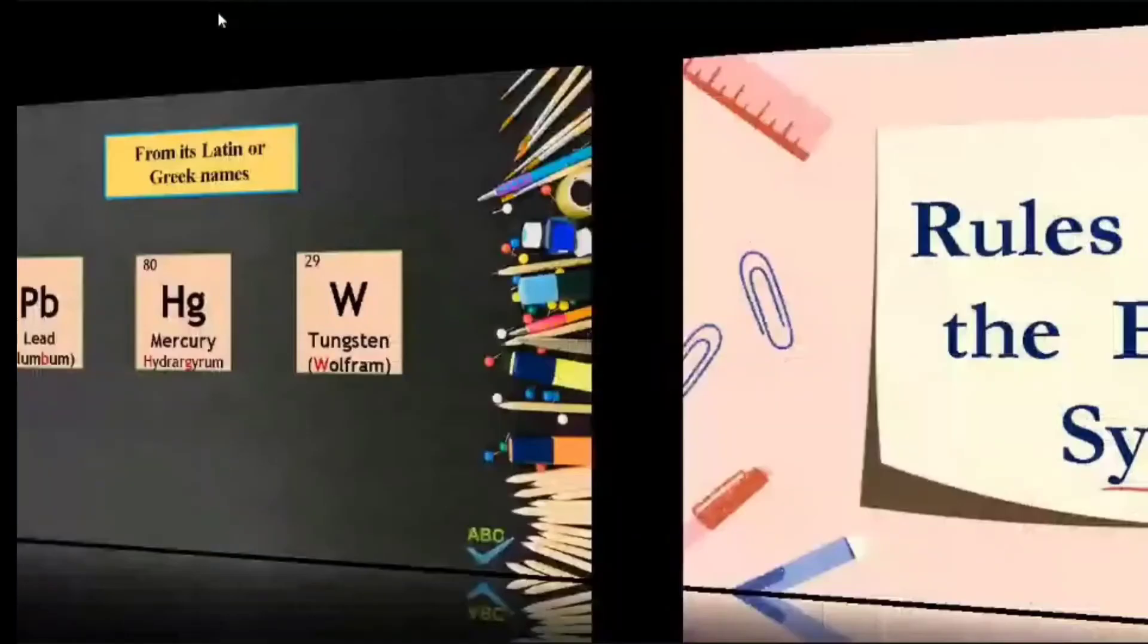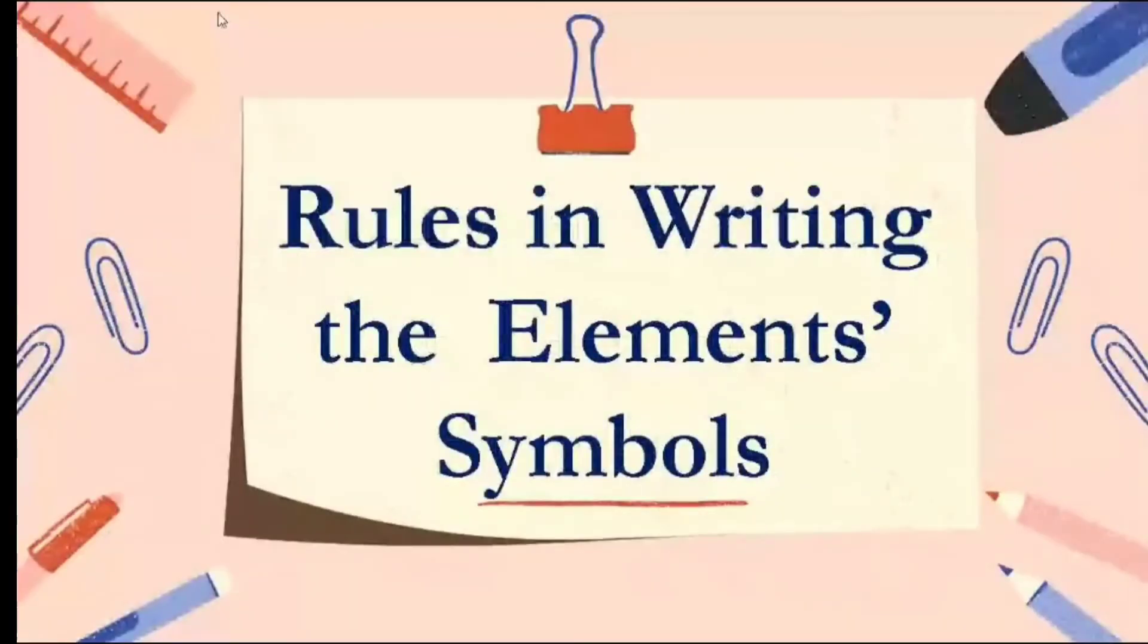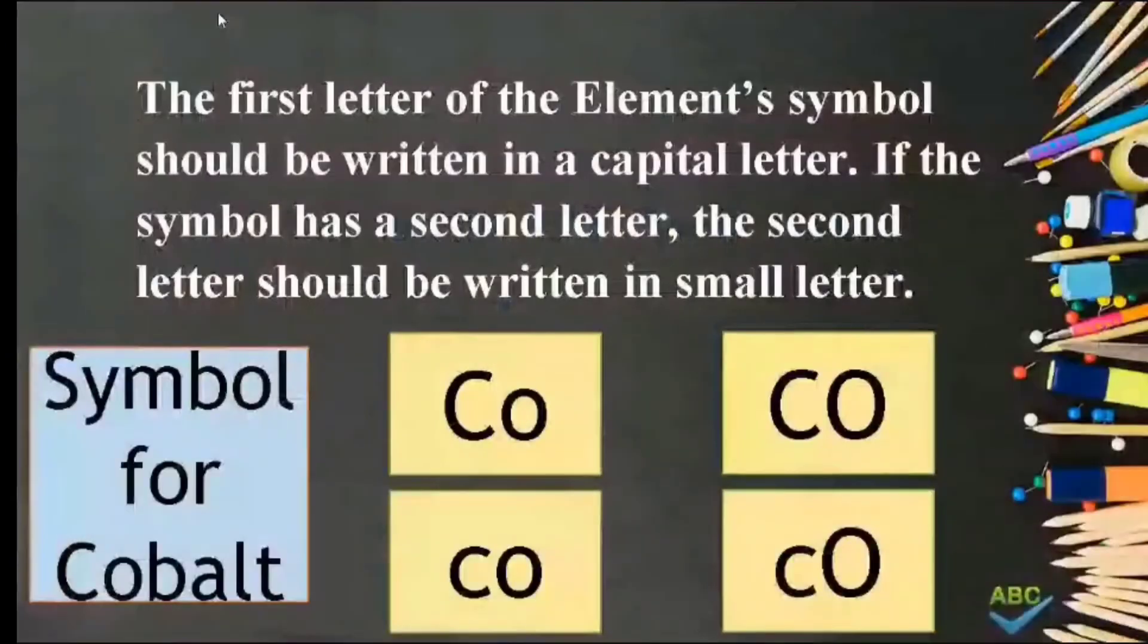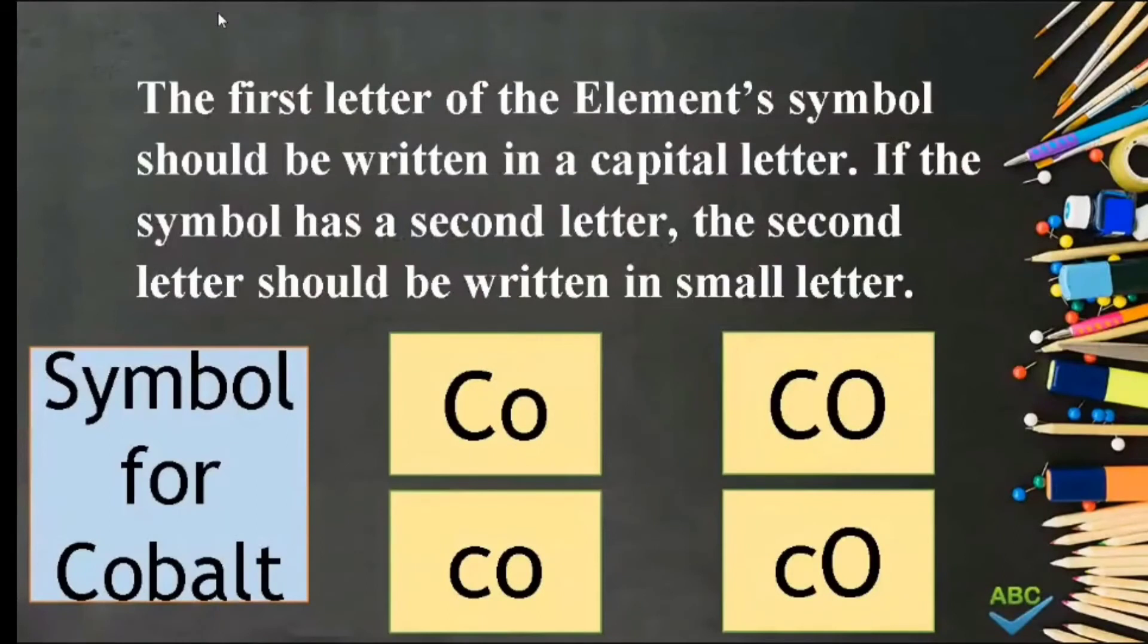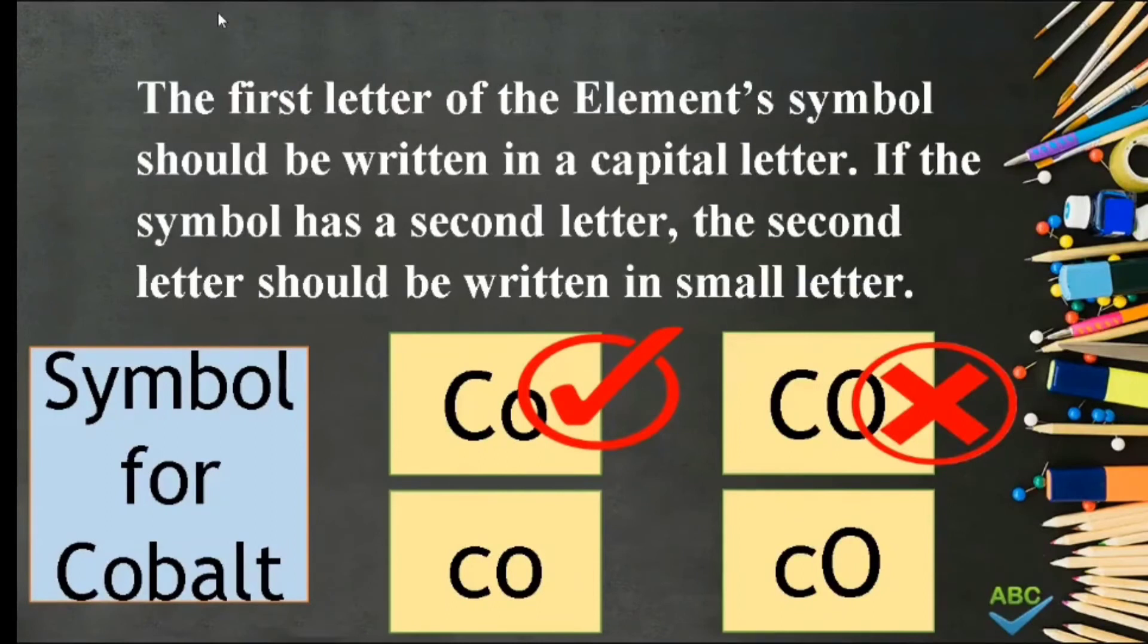Rules in writing the element's chemical symbols. The first letter of the element's symbol should be written in a capital letter. If the symbol has a second letter, the second letter should be written in small letter. So, if you were asked to write the symbol for cobalt, it should be capital letter C and small letter O. Remember, in writing an element's chemical symbol, it should be capital letter plus small letter.